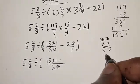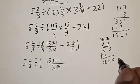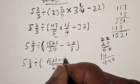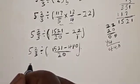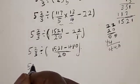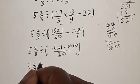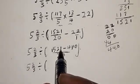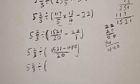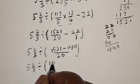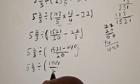20 times 22: 2 times 2 = 4, 2 times 2 = 4, giving 440. So we have 5 and 2/3 divided by 1521 minus 440 = 1081 over 20, close bracket.